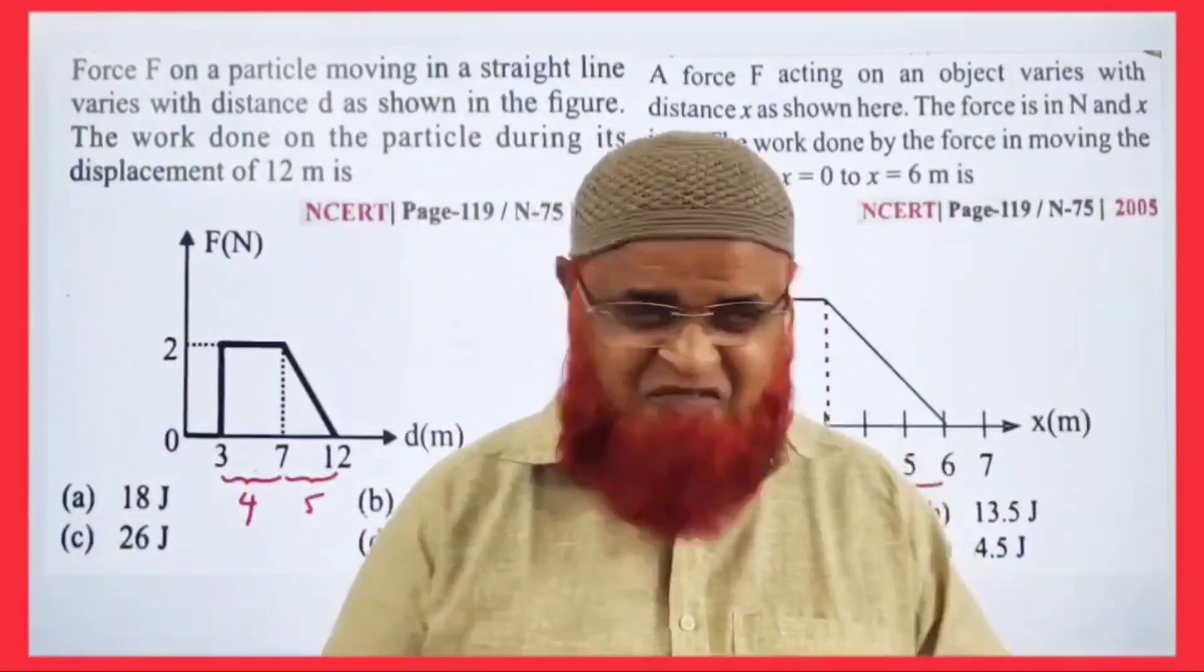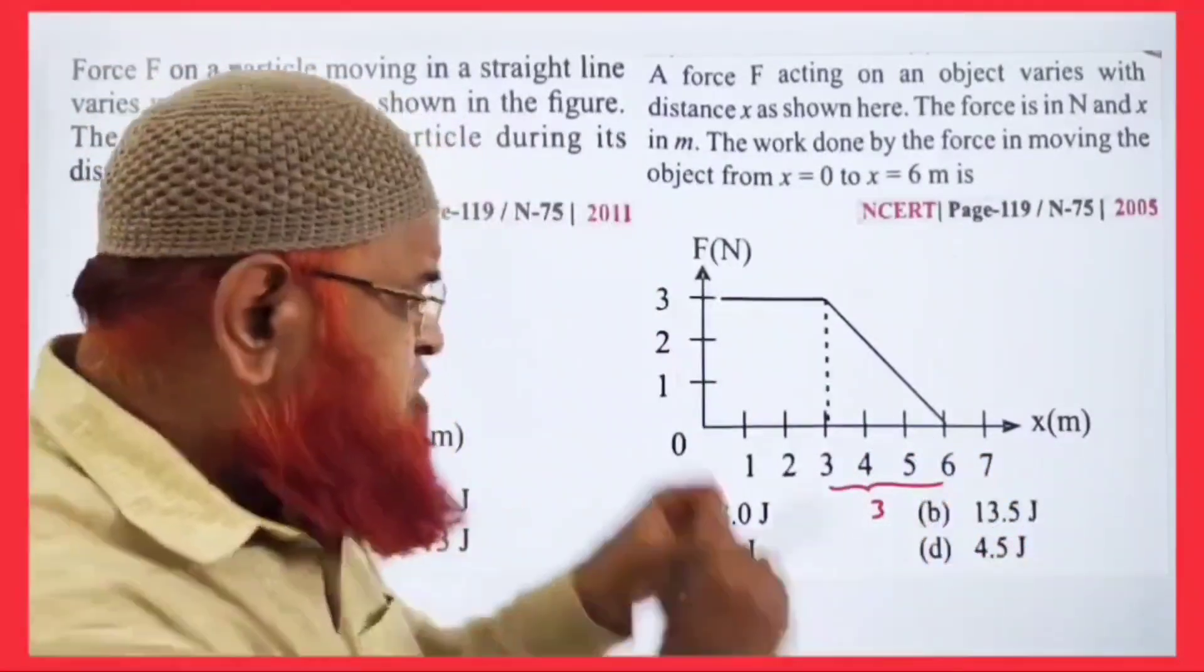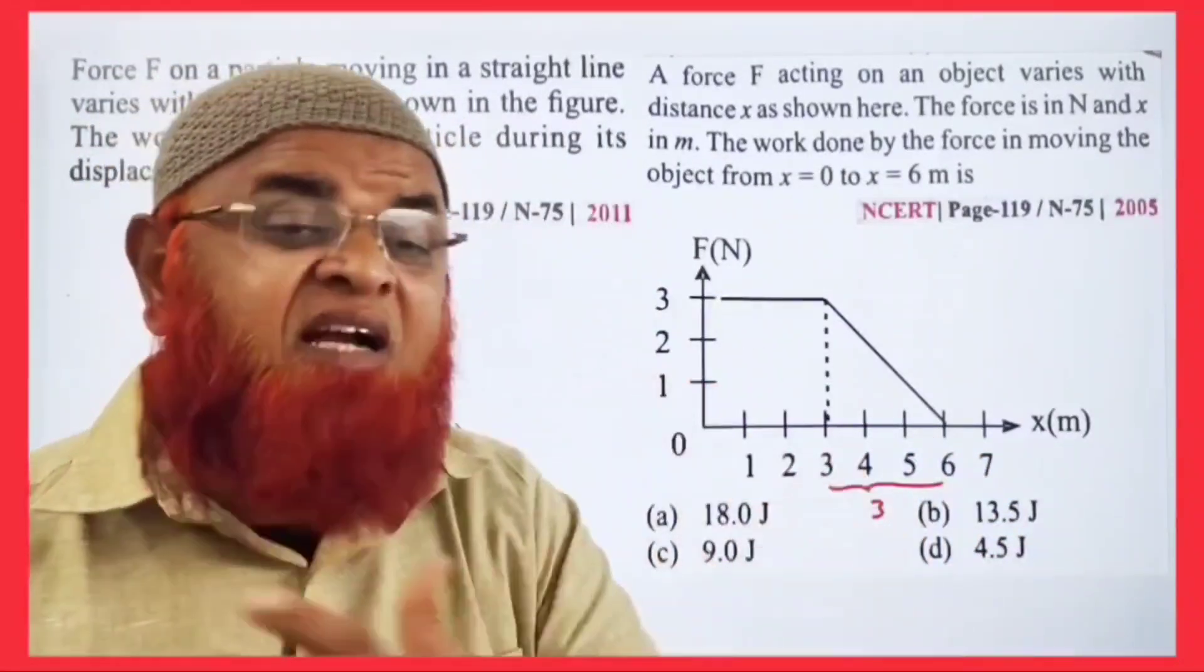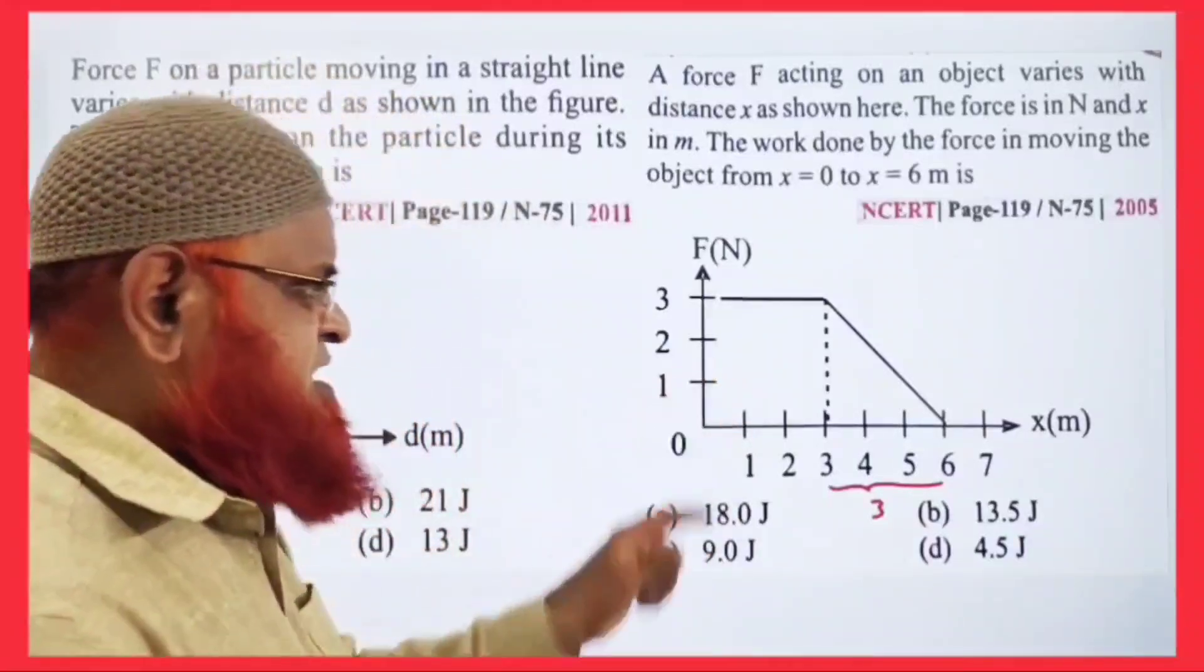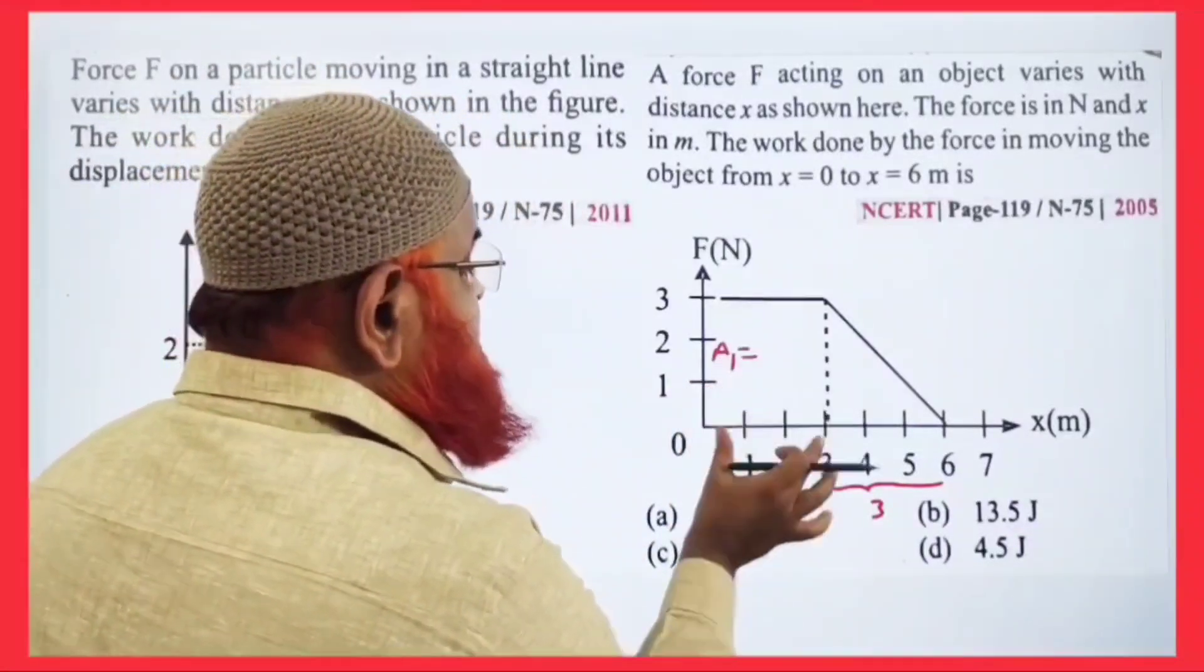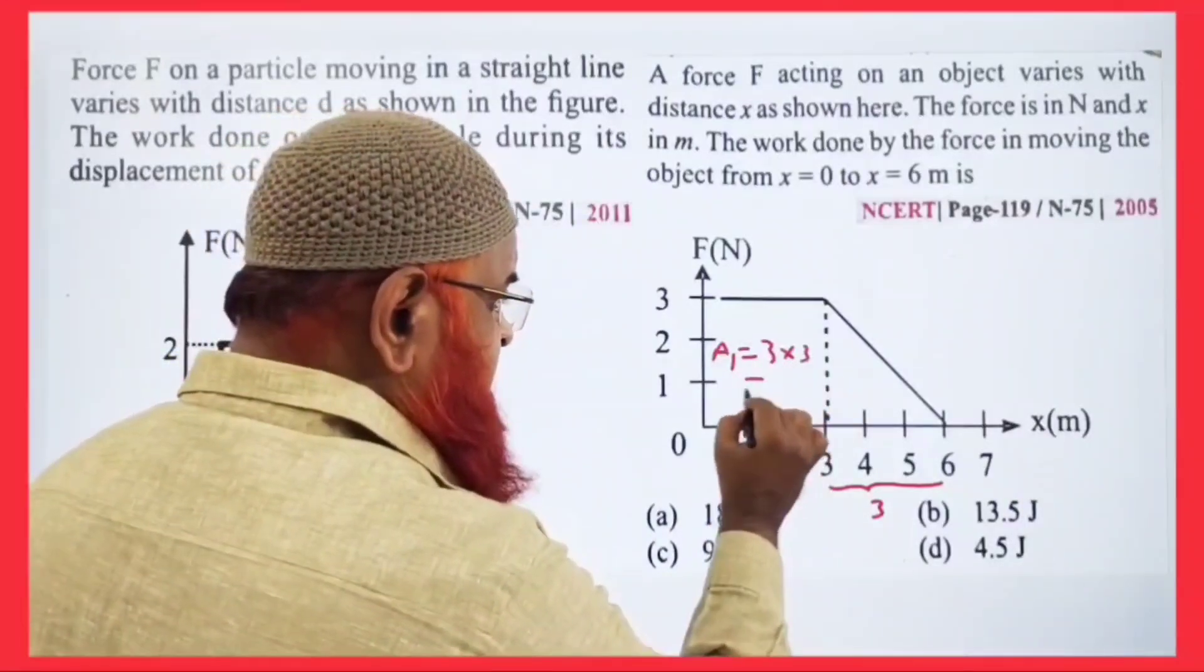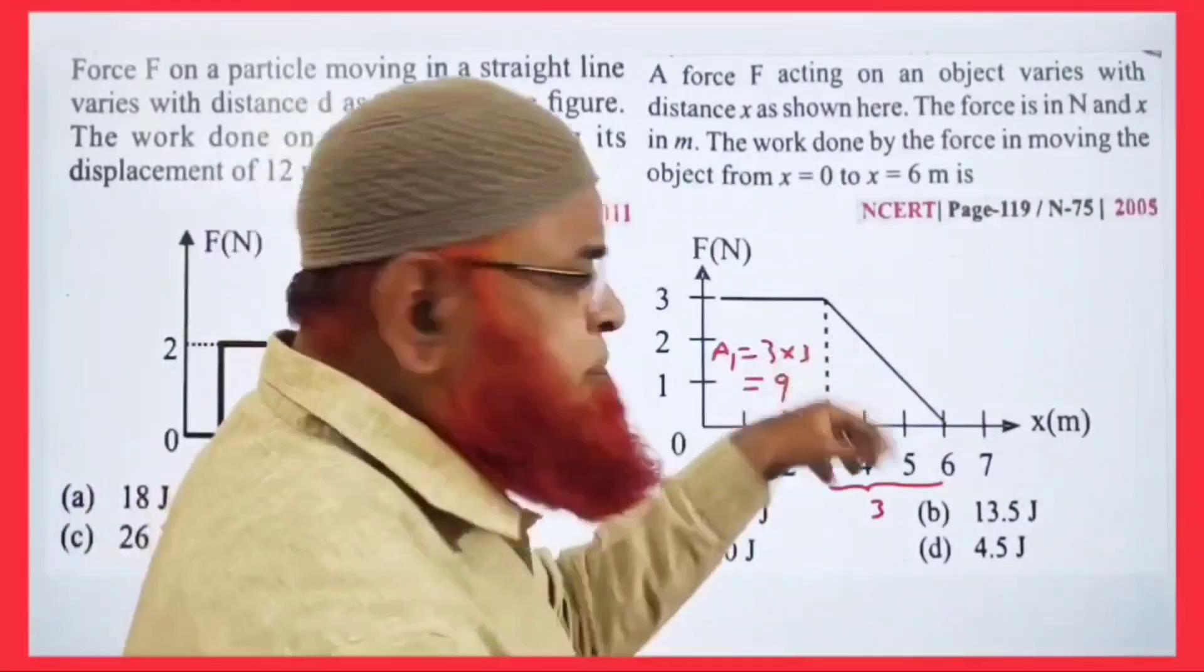These types of problems are regularly asked in work-power-energy regarding graphs. It's a force-displacement graph. If you find the area under the graph, you get work done. First, area A₁ is a rectangle: length times breadth = 3 × 3 = 9.